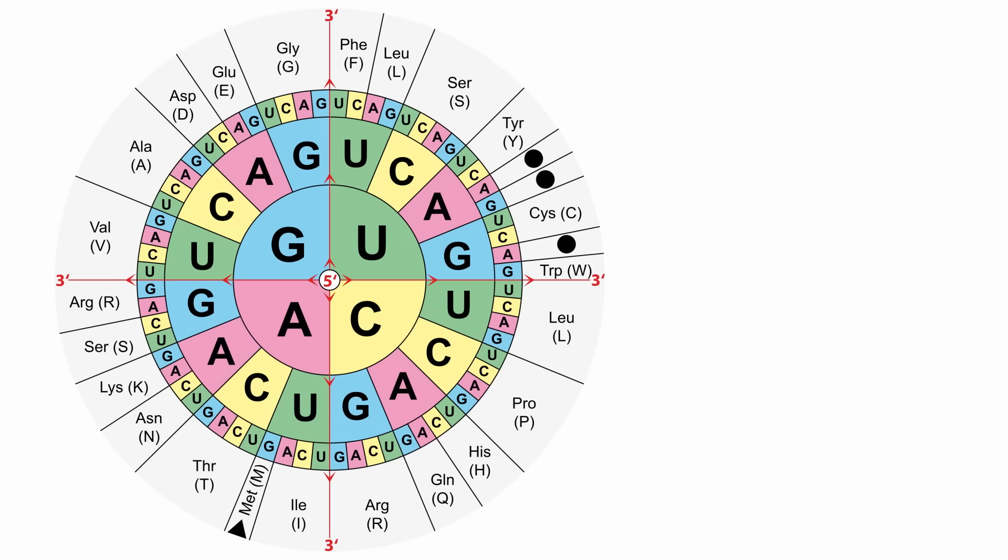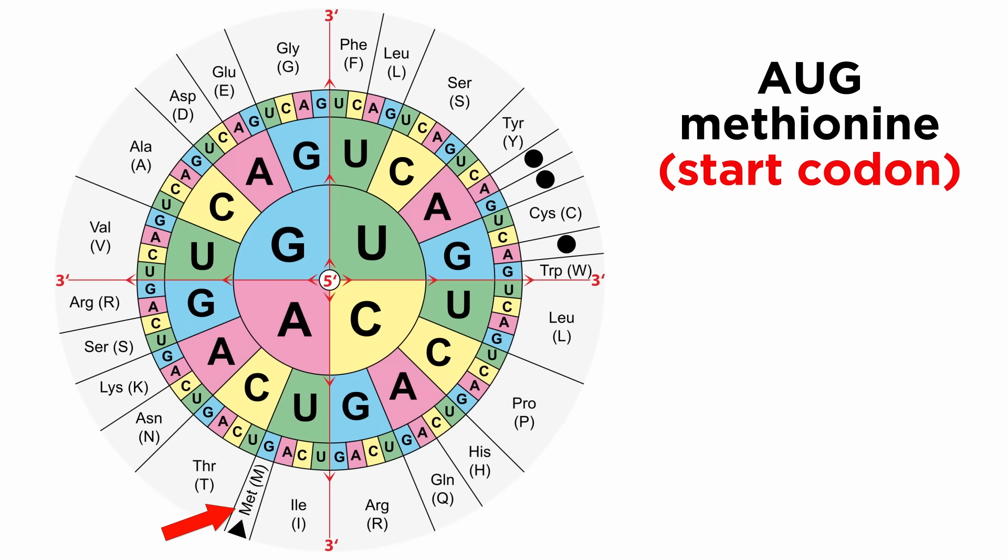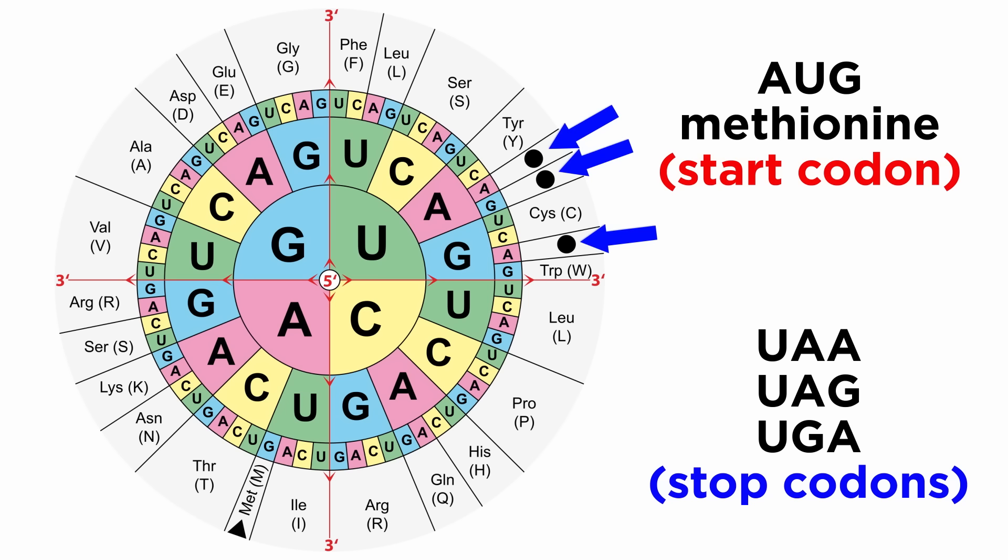Notice also that some of these codons are special. AUG is the start codon, which initiates translation by coding for methionine, and these three are stop codons. These are the ones that terminate translation.